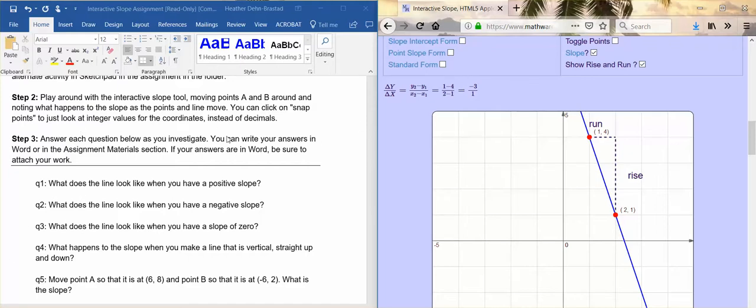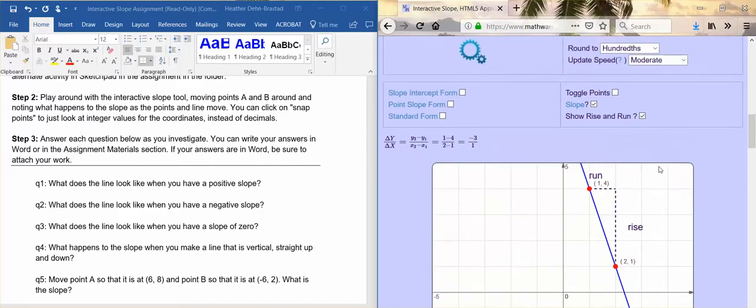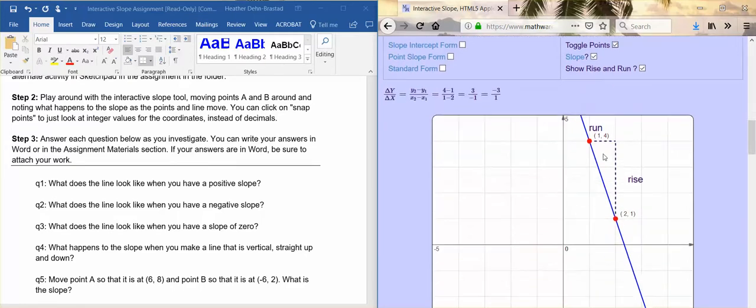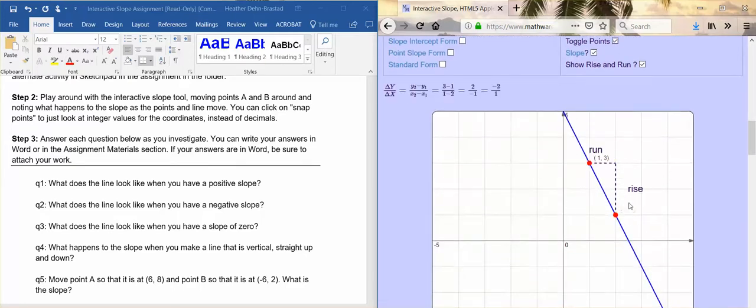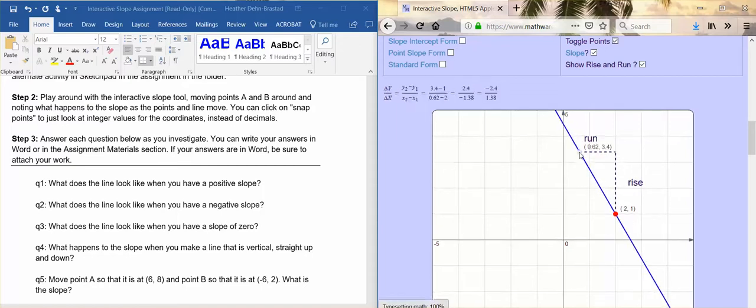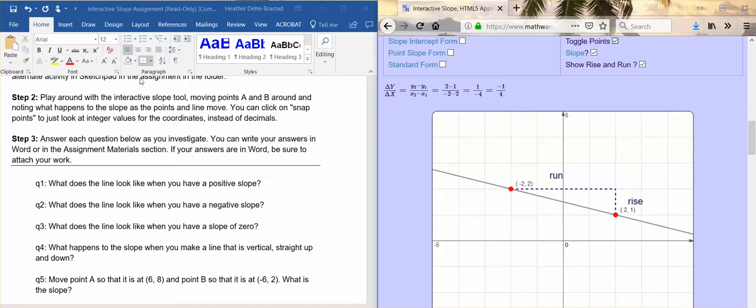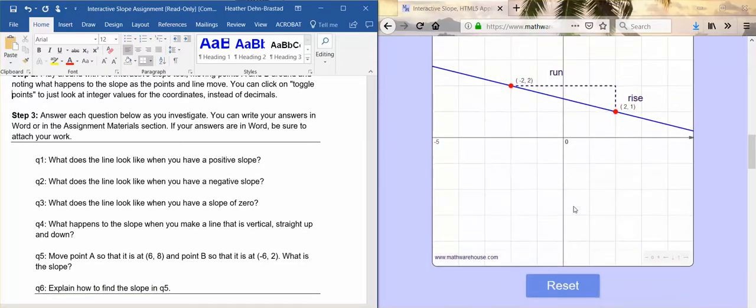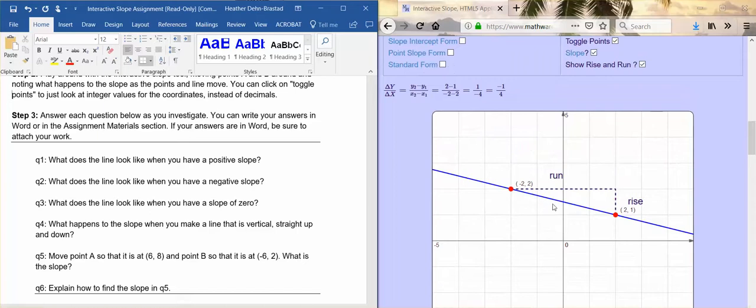After you've practiced moving it around, I think toggle points changes it to not being able to put it in those decimal points, not snapping it to an integer coordinate, which might be a little bit easier. So it's not called snap points, it's called toggle points. Once you have moved it around a little bit and kind of get an idea how this applet is working, you're going to answer these questions.